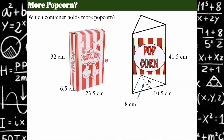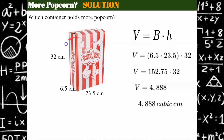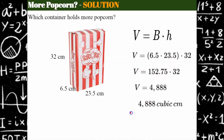Welcome back. I'm going to find this popcorn box first. The volume is base times height — the area of the base is 6.5 by 23.5, multiplied by a height of 32. The height of this rectangular prism box is 32. I do the math and get a volume of 4,888 cubic centimeters.